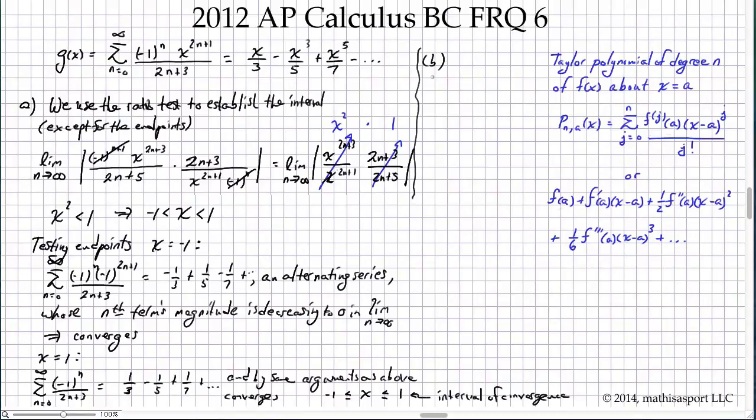In part B, they've told us that when you plug in x equals 1/2, you also get an alternating series whose terms decrease in absolute value, and they tell us what the approximation is. G(1/2), they say, is approximately 17/120 when using, or equals 17/120 when using the first two non-zero terms. They want us to show that the error of this approximation differs from the true value by less than 1 in 200.